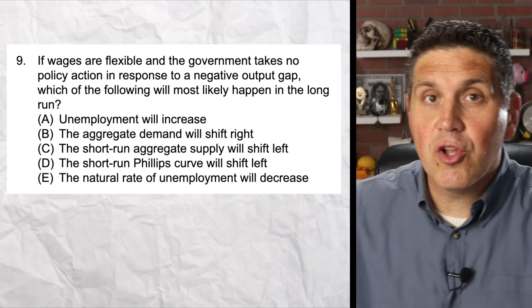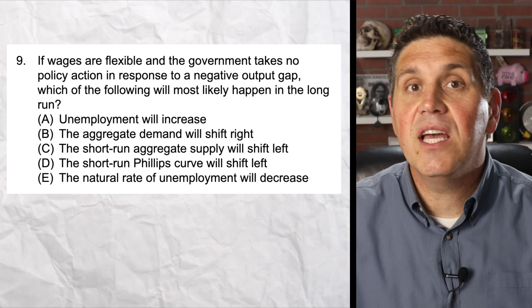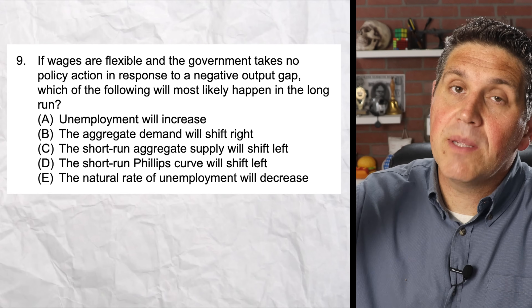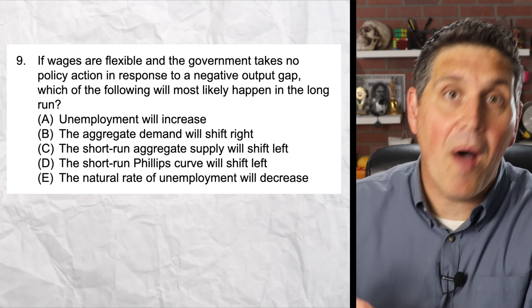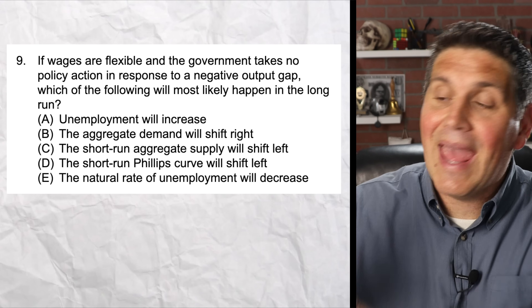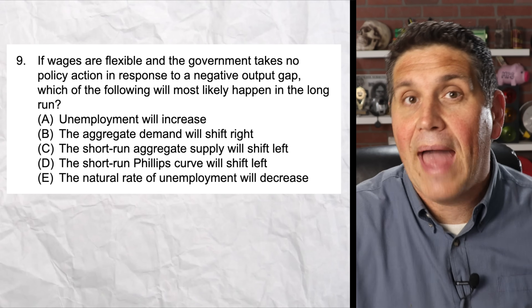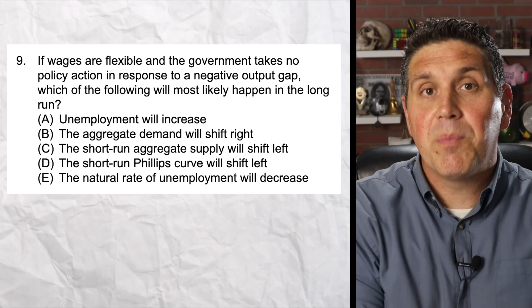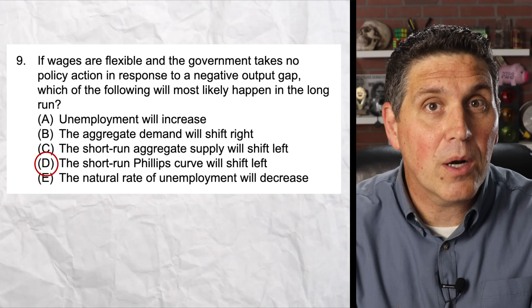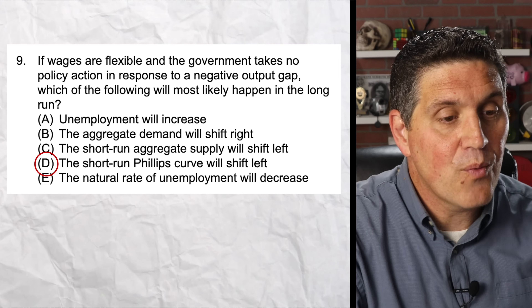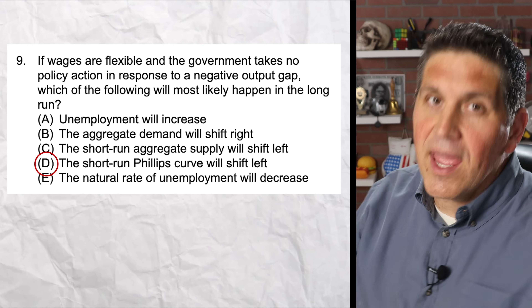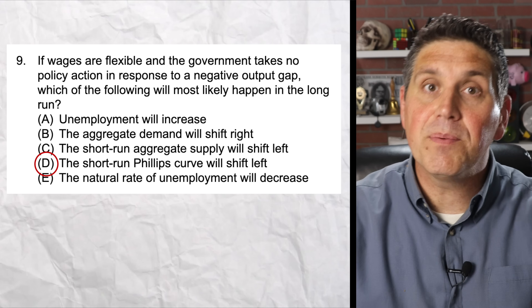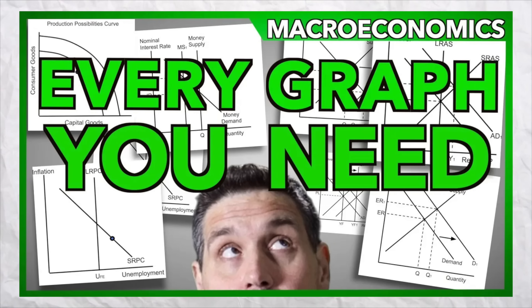Question nine covers long-run self-adjustment, a concept from unit three. Remember that policymakers can use fiscal policy, monetary policy, or no policy. Fiscal and monetary policy shift aggregate demand, while no policy shifts short-run aggregate supply. When there's a negative output gap, eventually in the long run the short-run aggregate supply shifts to the right, which means the short-run Phillips curve shifts to the left. The right answer is D. Make sure you understand how shifts in aggregate demand and supply affect the Phillips curve — check my key graphs video for more help.